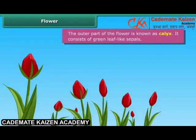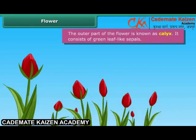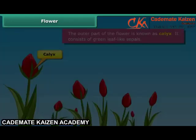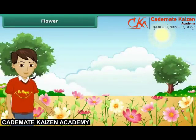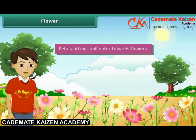The outer part of the flower is known as calyx. It consists of green leaf-like sepals. The inner part of the flower is called corolla. It comprises the petals. Different flowers have petals of different colors. Petals attract pollinators towards the flower.